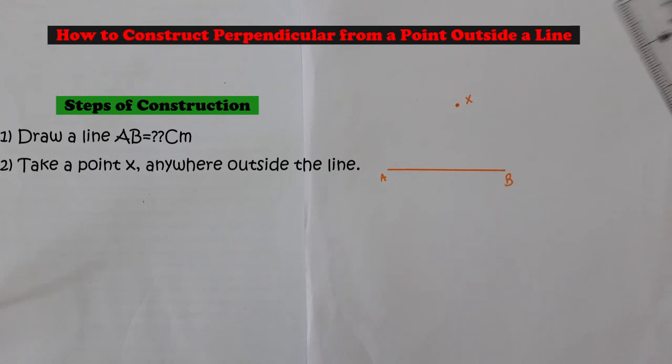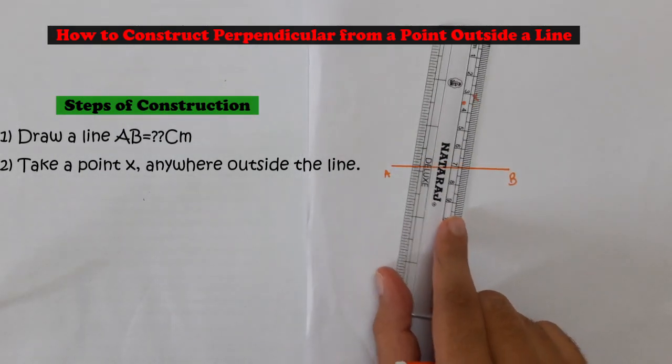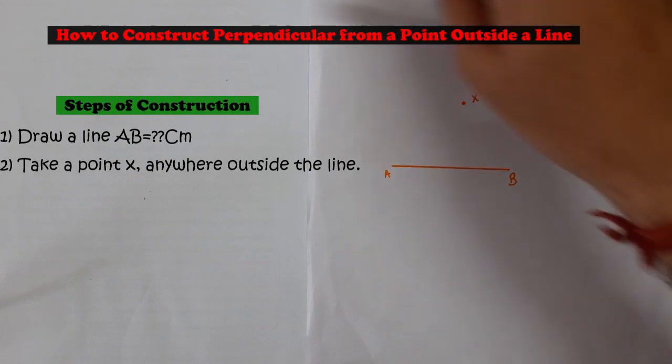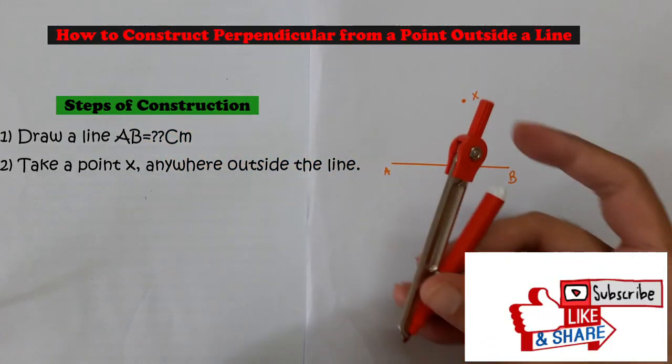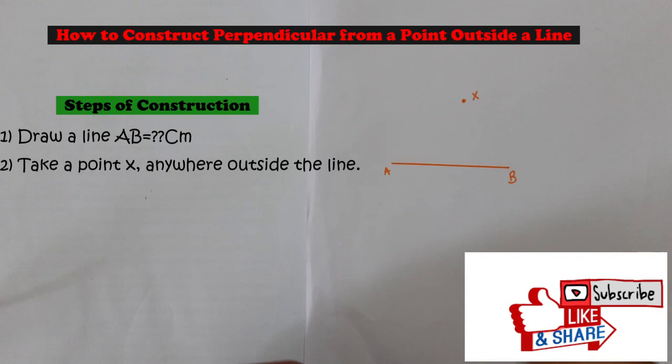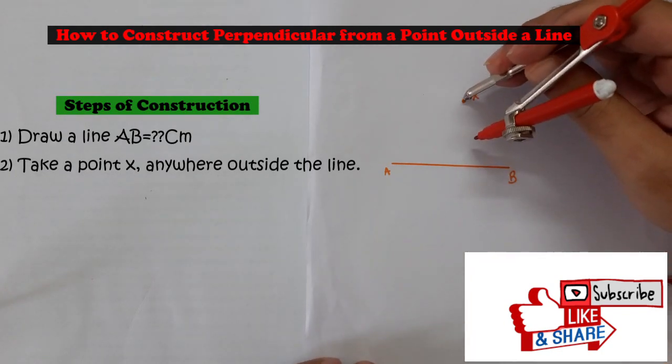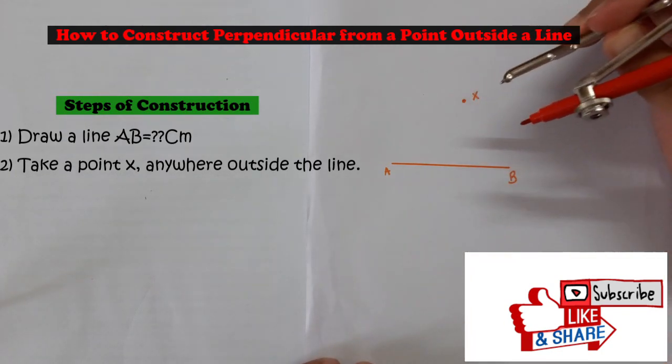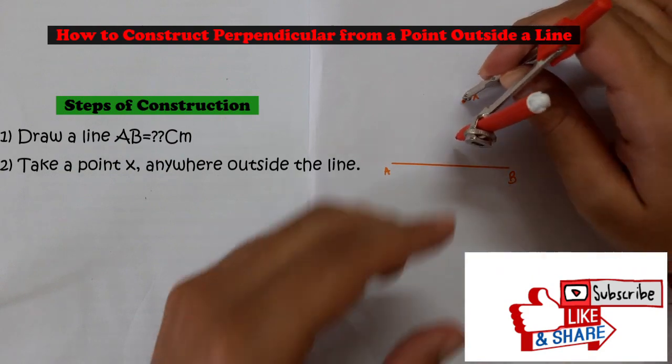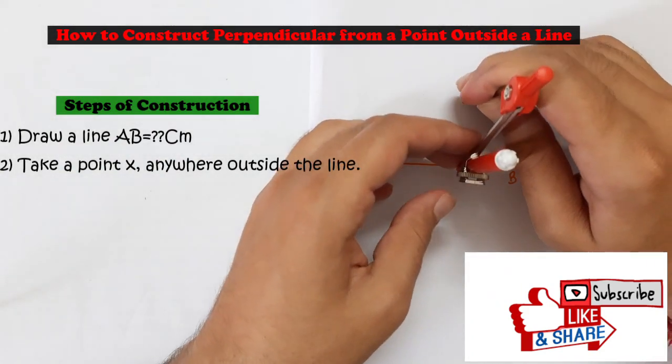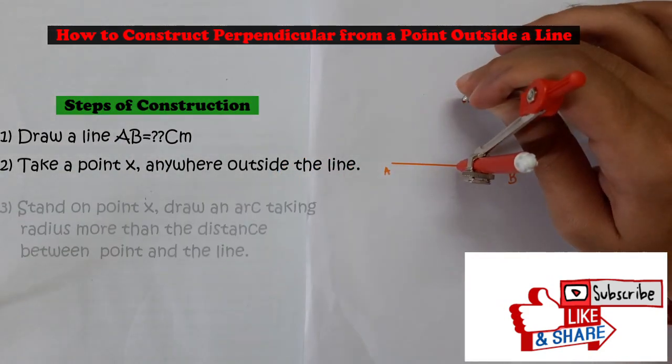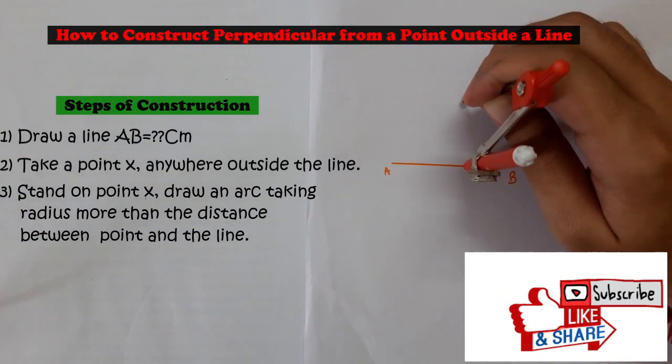So from this point I am going to construct a perpendicular to this line. We cannot do it like this straight line, no, we need to construct. For that, stand on point X and open the compass till line AB.